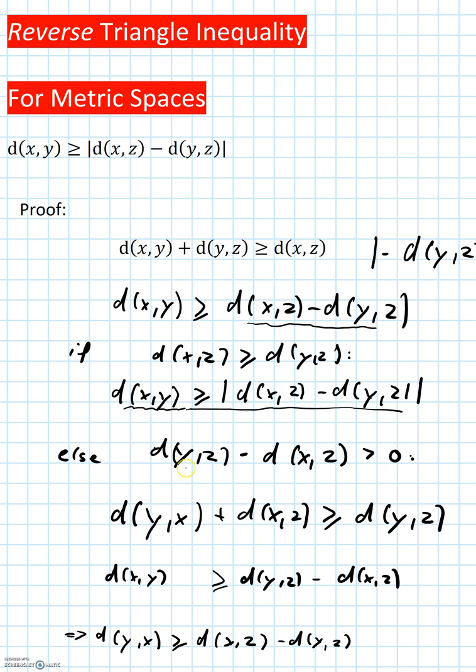So note that if d(x,z) minus d(y,z) is smaller than 0, we have that d(y,z) minus d(x,z) is bigger than 0. So I've just flipped those two, and we get an expression that is bigger than 0.